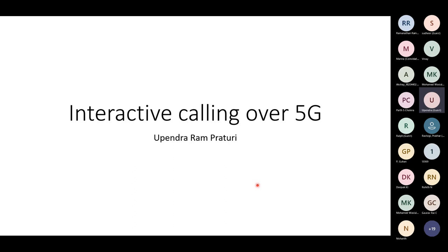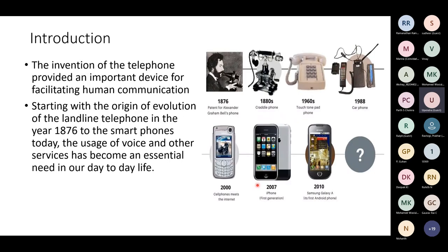We are now into 5G and interactive calling — that is where we will end up, but let us start from the introduction. With the invention of the telephone, one of the great parts is communication — even when you are far, you can communicate with family and friends. The telephone was invented in 1876, and then all the way from landline phones to 1G, 2G phones, iPhones, and all smartphones — that is how we've progressed.